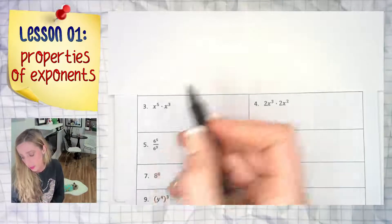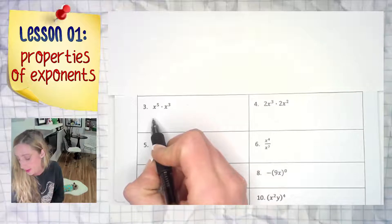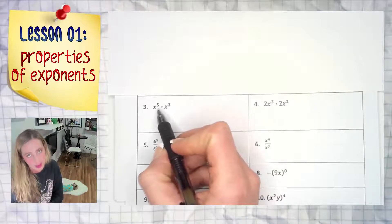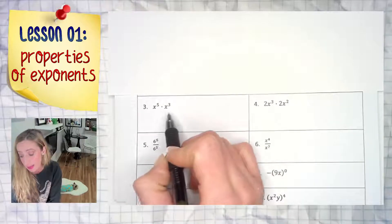Hey everybody, this example we are just looking at x to the fifth power times x to the third power. If that was a plus or a minus sign, you would not be able to do anything because they would not be like terms.